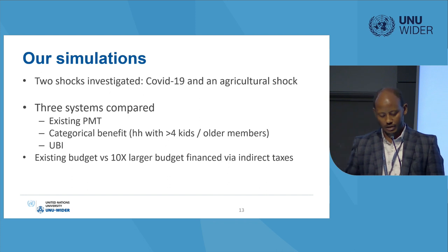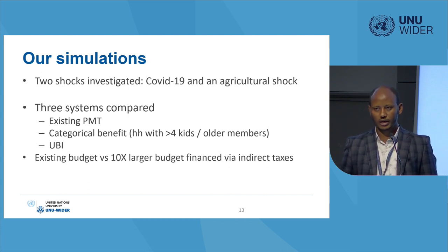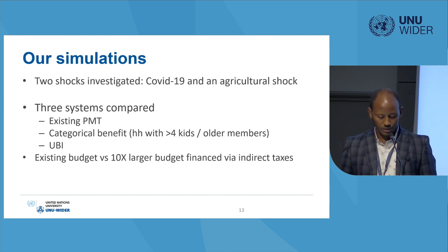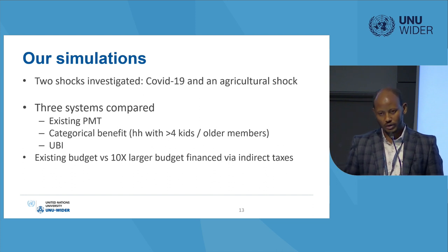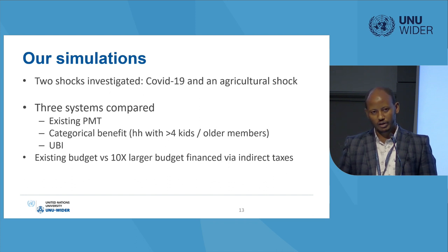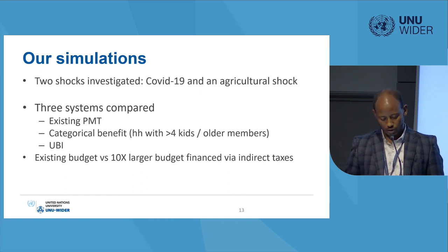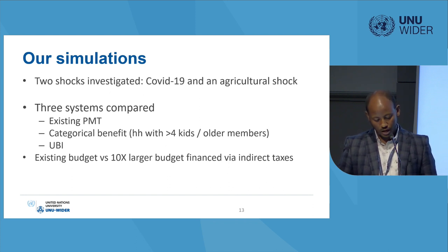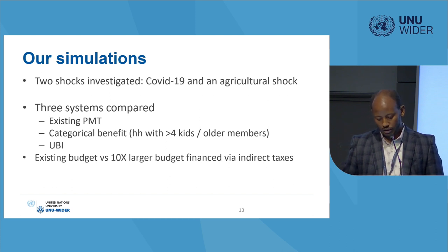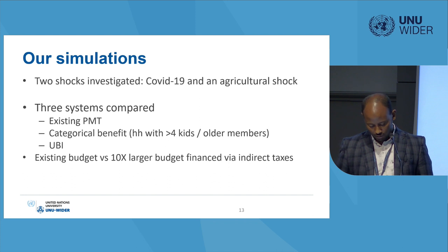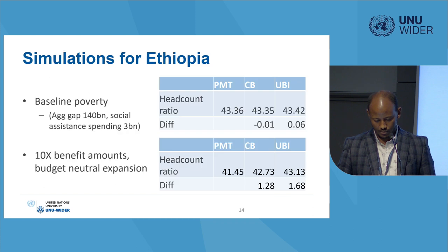We have three system scenarios. First, the existing PMT — the Productive Safety Net Program — where beneficiaries remain the same in both baseline and crisis cases. Second, a categorical benefit using simple criteria: households with more than four children or individuals over 65 receive the benefit. Third, a simple universal basic income distributing an equal amount to everyone. We also simulated a scenario with an expanded budget by multiplying the benefit amount tenfold for individuals receiving benefits in the baseline case.